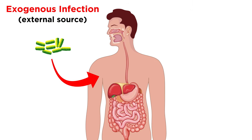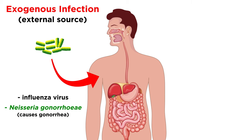Disease that arises from exposure to an external source is called an exogenous infection. Examples of pathogens in this category include the influenza virus, the bacteria that causes gonorrhea — Neisseria gonorrhoeae — or the bacteria that causes tetanus, Clostridium tetani, all of which we will look at in more depth very soon.